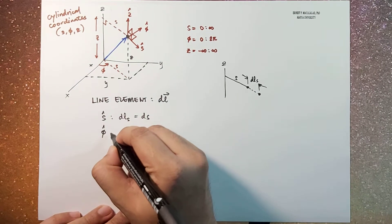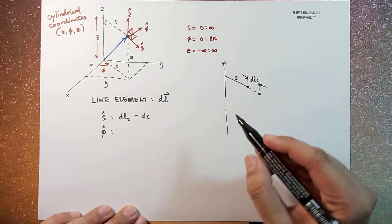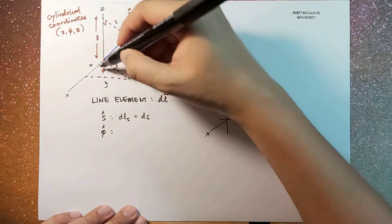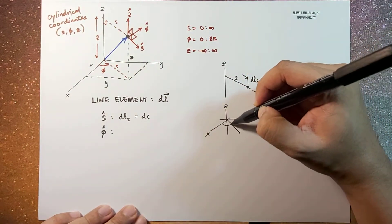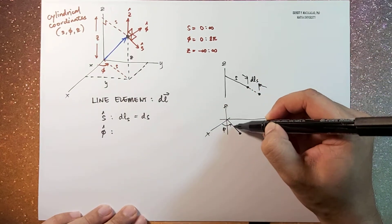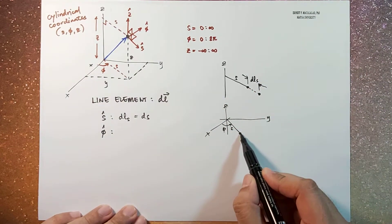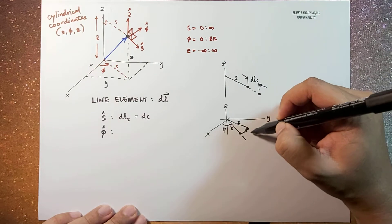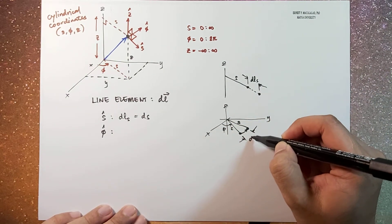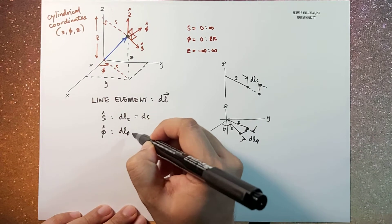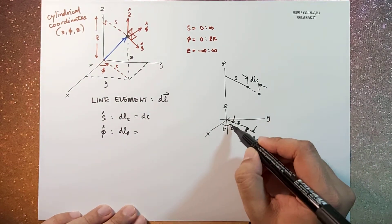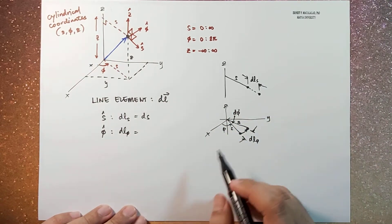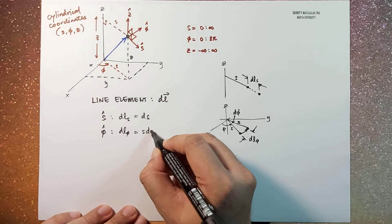Now the angular length d phi is best illustrated when we're talking about, let's say, x, y, and then z. So if this is your phi, this would be your s. Now if this moves in this direction, this would still be s. This arc length is your d l phi. Now this infinitesimal angular displacement is your d phi, so this is just your simple arc length s d phi.